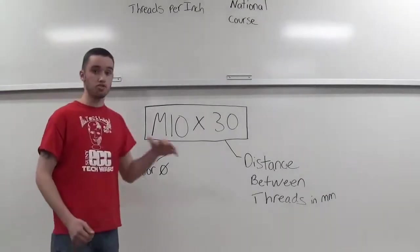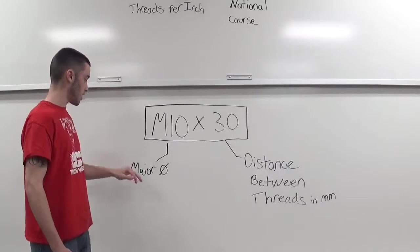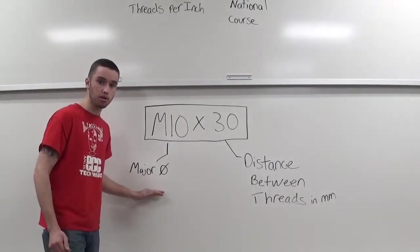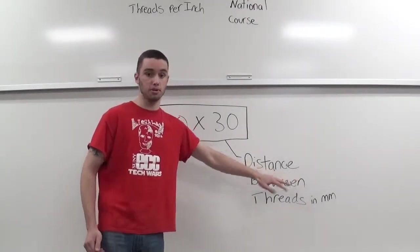Here is the metric callout of a thread. You have your M10 by 30. So M10, that is your major diameter. And then you have your 30, which is your distance between threads in millimeters.